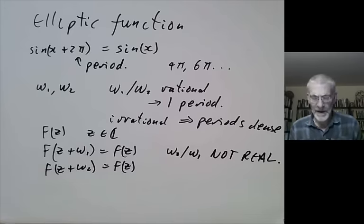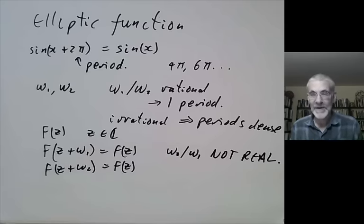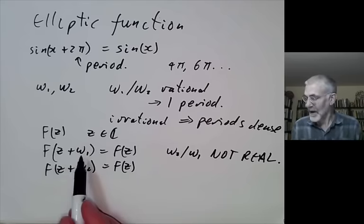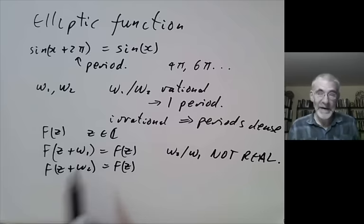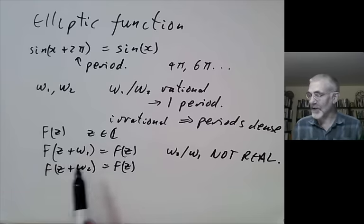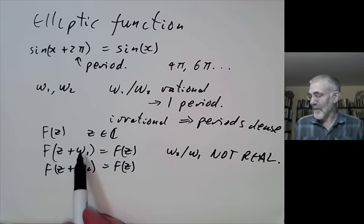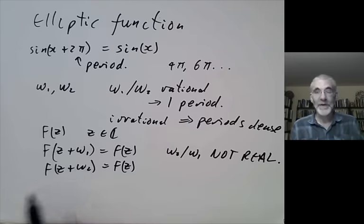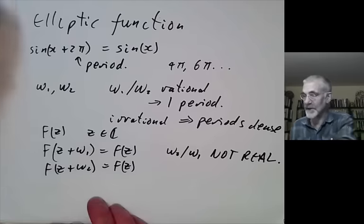Unfortunately, one of the main problems in the theory of elliptic functions is that the notation is a complete mess and not standardised at all. Every author who writes about elliptic functions invents their own system of notation. I'm using ω₁ and ω₂ for the two periods, but other books use all sorts of different notation.